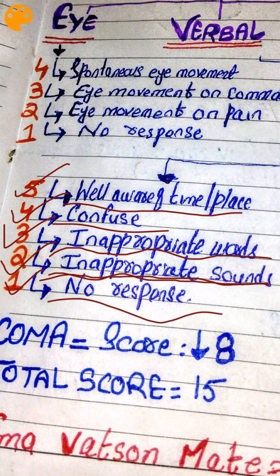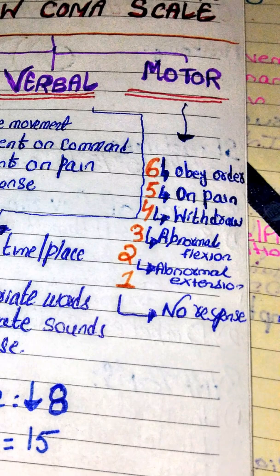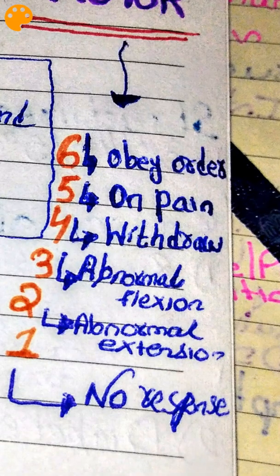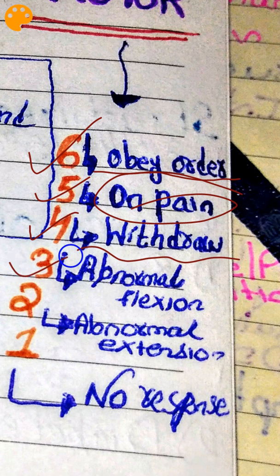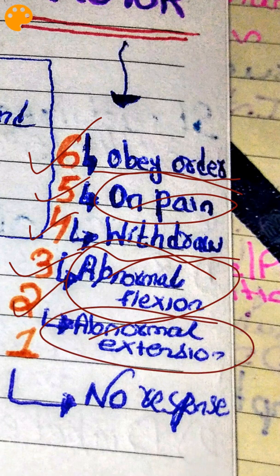Now let's discuss the Motor component. M6 means the patient obeys orders and moves their arm on command. M5 means the patient does not move on command but can move on painful stimuli. M4 means withdrawal response. M3 means abnormal flexion movement of the arm. M2 means abnormal extension movement of the arm. M1 is the worst response — no response.